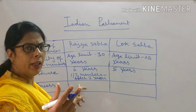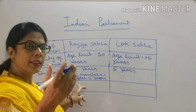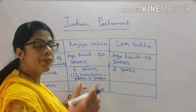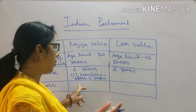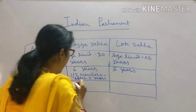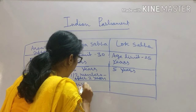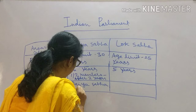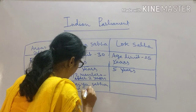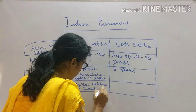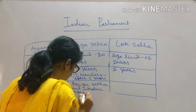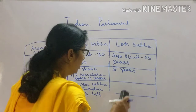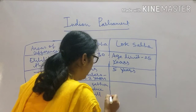In an ordinary bill, Rajya Sabha has the same power as the Lok Sabha. But in a money bill, Rajya Sabha does not have the same power as Lok Sabha — Rajya Sabha cannot introduce a money bill, but Lok Sabha can introduce the money bill.